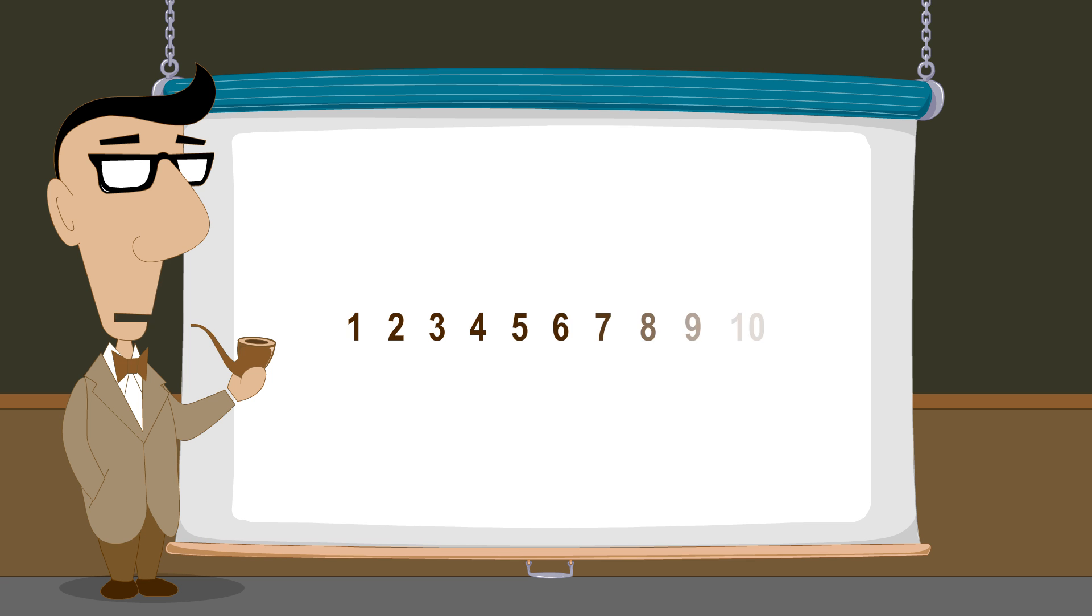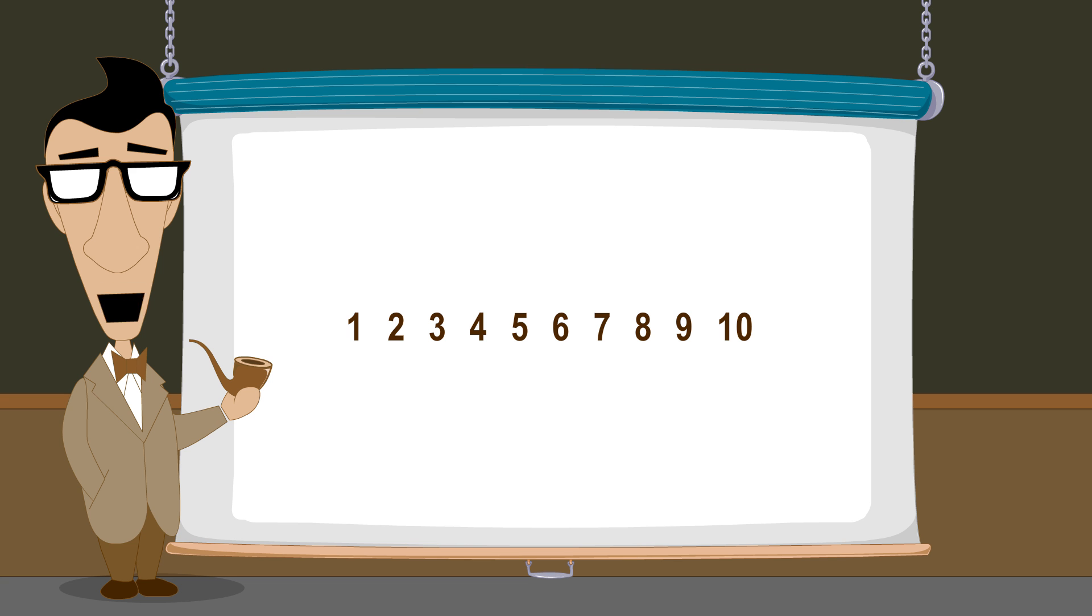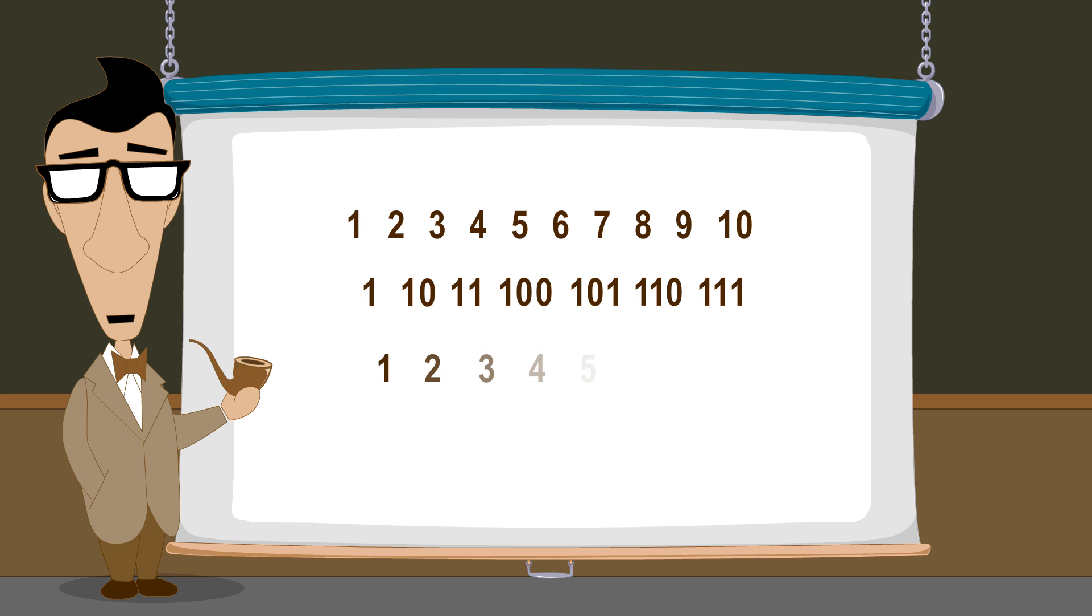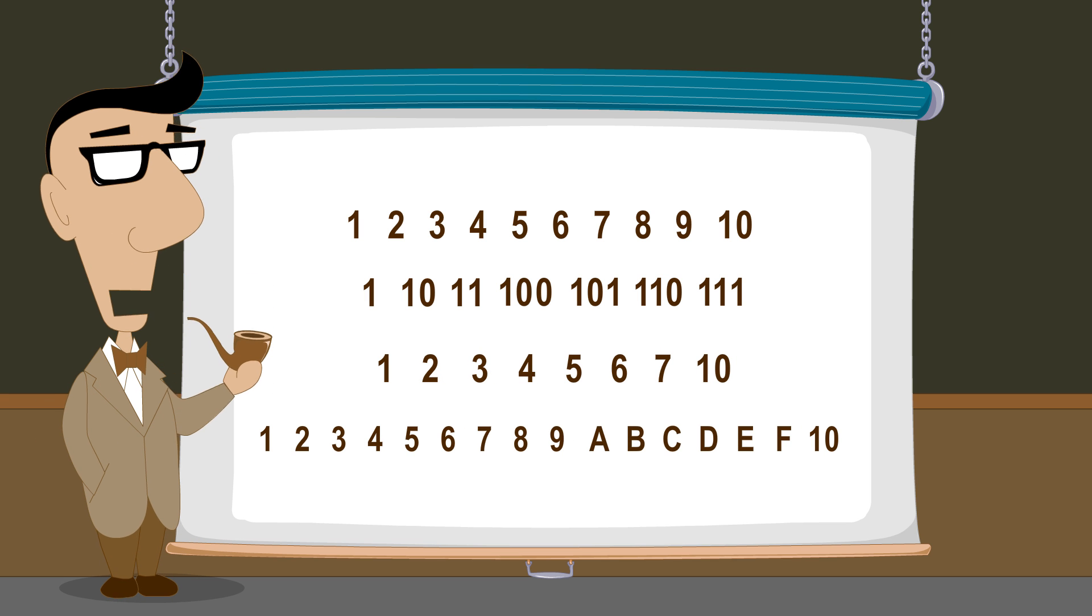The natural number system used today with which most everyone is familiar is called the decimal or base 10 number system. In the next lecture, we will explore these numbers as well as other natural number systems using other bases such as binary, octal, and hexadecimal which are often used when working with digital computers.